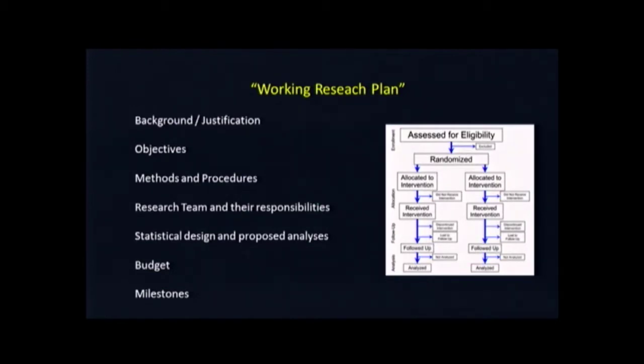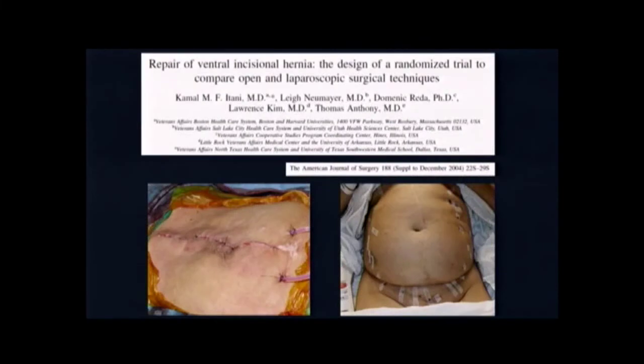You have to have milestones within a research project — the milestone isn't completion of the research project; there are milestones within the research plan itself. Some research plans are so well thought out and constructed that the methodology actually becomes a publication in itself. This is really high-level research. As an example, a prospective randomized trial of laparoscopic versus open ventral hernia repair done in the VA system was so well constructed that as an investigator at another site, you could take that research plan and implement it yourself.